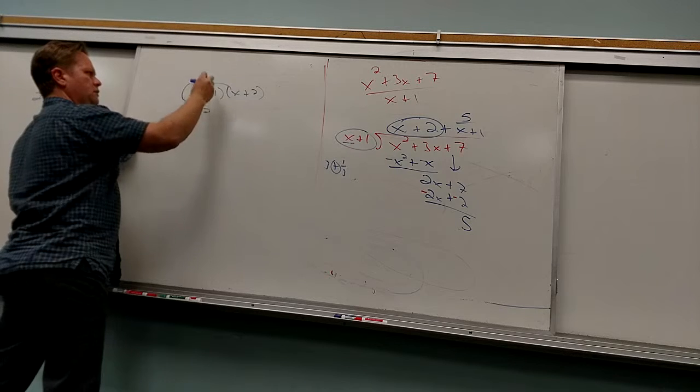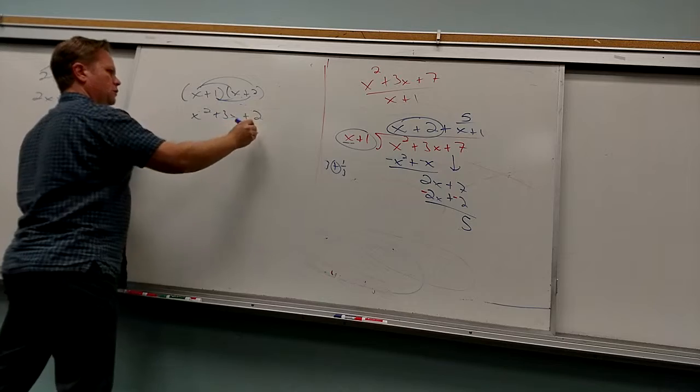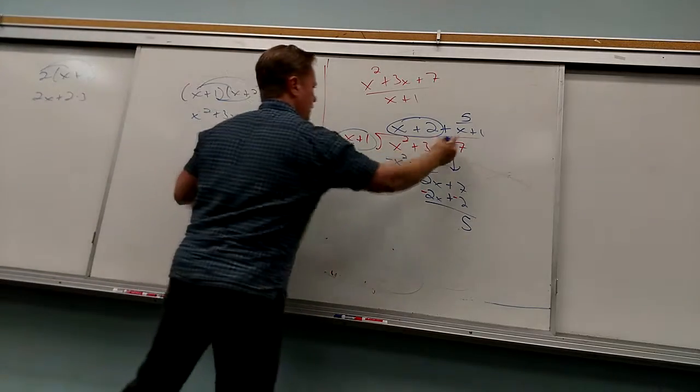What's X plus 1 times X plus 2? X squared. X squared. 2X and 1X is 3X. Is that cool? Plus 2. How far off is that from what's actually in here?